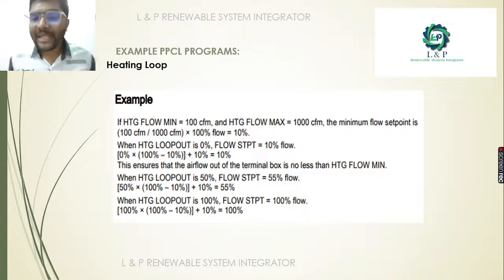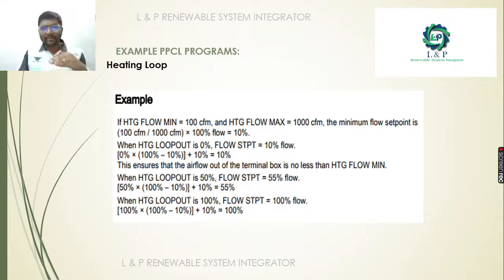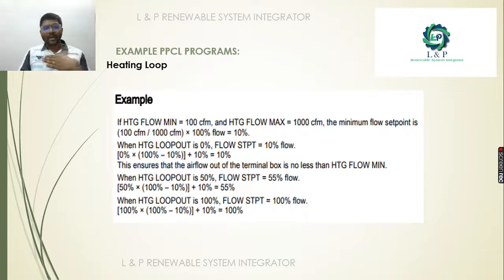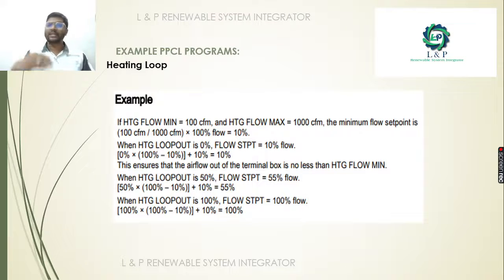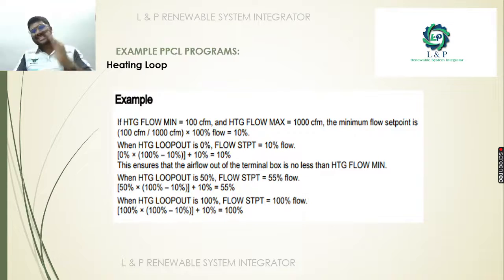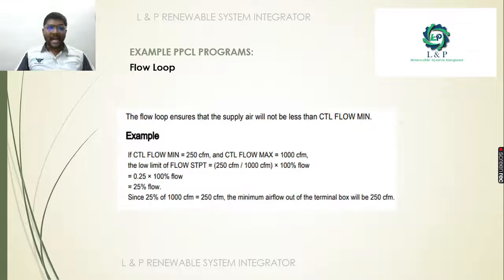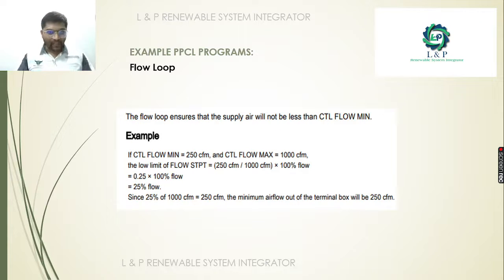In heating mode, as mentioned, there should be a minimum airflow and a maximum airflow. Based on our requirement and values, we need to maintain the minimum flow — it can range from 55% to 100%. This is the PPCL program used to write inside these controllers. For a flow loop, you can use these programs to control and maintain the minimum airflow.